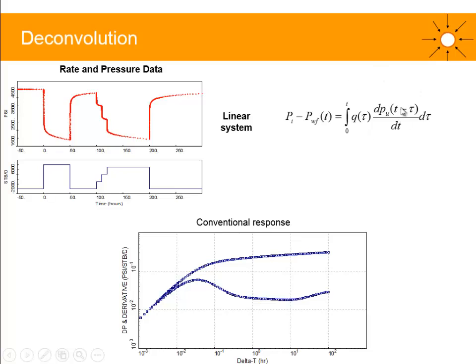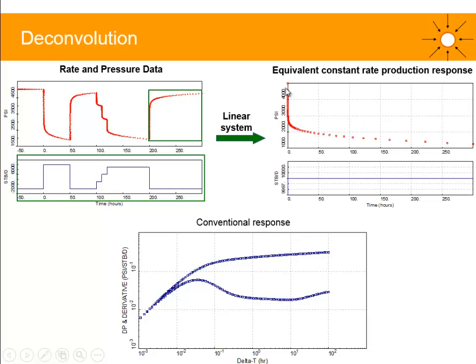The deconvolution algorithm is going to extract PU based on these different inputs. We're going to input an estimate of initial pressure, we've got our wall pressure from this PBU, and we've got the rate from the rate history. The deconvolution is going to extract PU, and this is the response here in red.